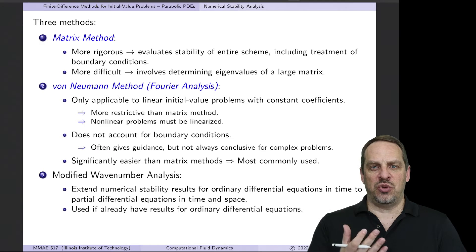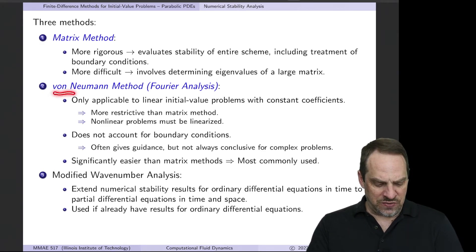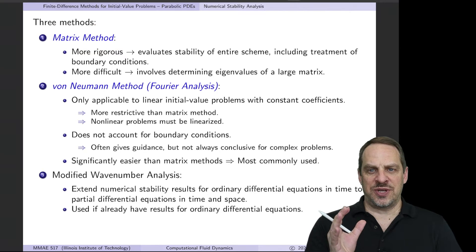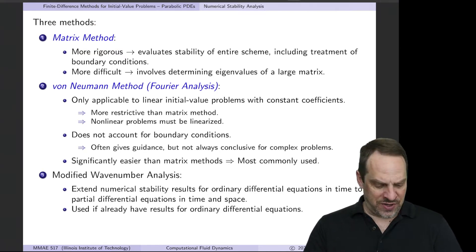So nine times out of ten, if someone says they did a numerical stability analysis, more often than not, that's been done using the von Neumann method, this Fourier approach. So we're going to discuss in this video the matrix method. It's relatively simple conceptually, it's just hard to get all the eigenvalues. And then in the next video we'll look at the von Neumann method, which is the more common approach.